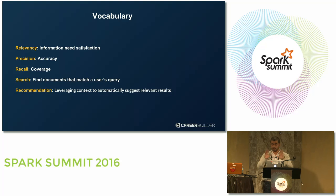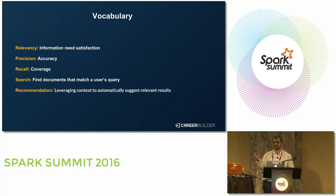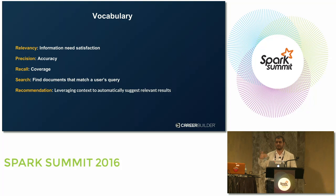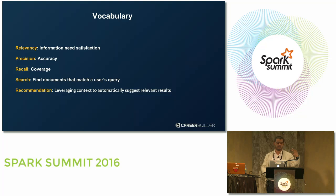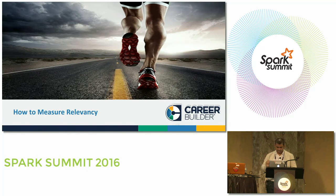Now let's build our vocabulary in natural language. Relevancy refers to information needs satisfaction — you search for Spark Summit, and the results from Google must satisfy your need. Precision and recall are very popular for measuring relevancy: precision refers to accuracy, recall refers to coverage. Search usually finds documents that match users' queries. Recommendation leverages context to automatically suggest relevant results. Now we are jogging towards the finish line — how to measure relevancy.